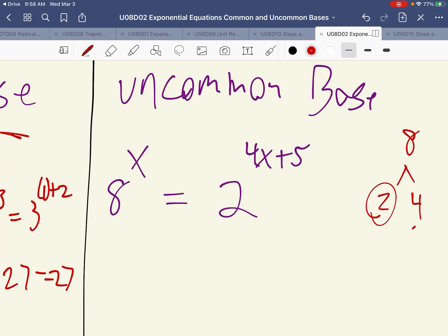8 is equal to 2 times 4. 2 is a prime number. 4 is equal to 2 times 2, which are both prime numbers. So we can rewrite 8 to the x power as 2 to the 3rd power, and there's still an x here.